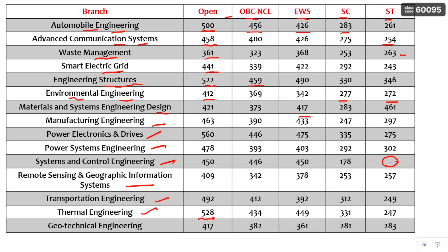Thermal Engineering — one of the top branches from Mechanical Engineering — has an open cutoff of 528 and an OBC Non-Creamy Layer cutoff of 434, with all other categories given here. Geotechnical Engineering cutoffs are also provided. These are all the cutoffs for the branches in this first slide.